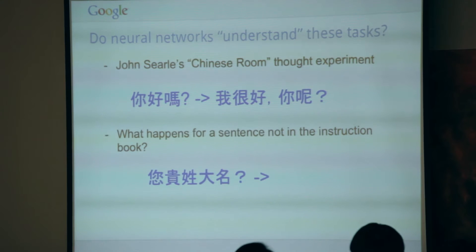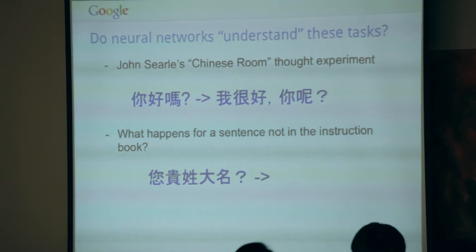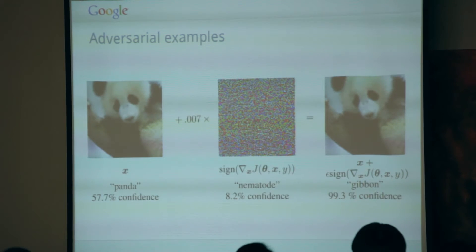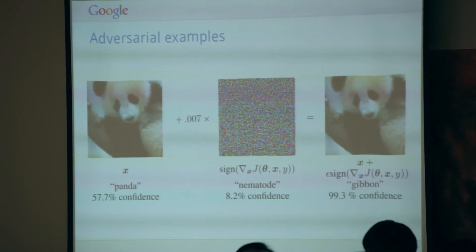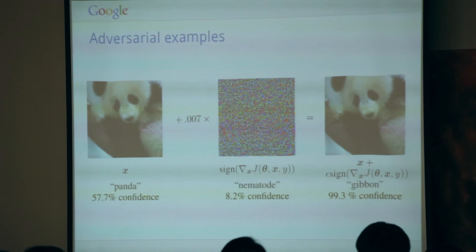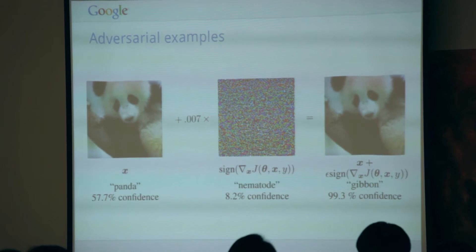One way to operationalize this idea and test whether a system understands what it's doing is to provide input that is not in its instruction book. For neural networks and statistical models, the instruction book is to find the probability distribution explaining the training data and run inference on it to label new inputs. We can produce out-of-distribution inputs by looking at the sign of the gradient of the cost function with respect to inputs and following that gradient uphill for a small amount at each pixel.